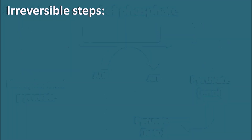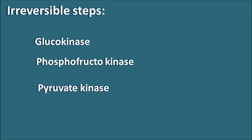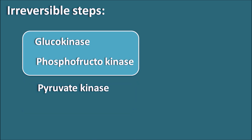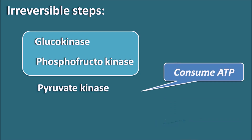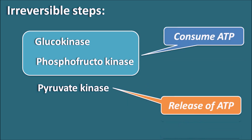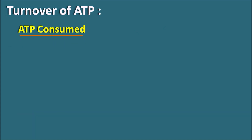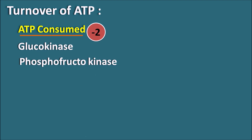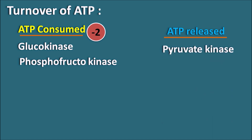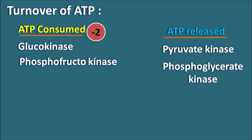Within glycolysis, the three important irreversible steps involve kinase enzymes: glucokinase, phosphofructokinase, and pyruvate kinase. The first two are in the preparatory phase and consume ATP; the last is in the payoff phase and releases ATP. Regarding ATP turnover: two ATP molecules are consumed initially. In the payoff phase, substrate-level phosphorylation at phosphoglycerate kinase and pyruvate kinase each release one ATP, and since glucose produces two pyruvate molecules, this gives a total of four ATP molecules released.